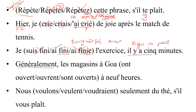Next: the clue word 'généralement' means 'generally' — something regular and habitual — which signals the simple present tense. 'Sont allés' is passé composé, wrong. 'Sont allées' also wrong. 'Généralement' is the clue for simple present, so the simple present form is the answer.